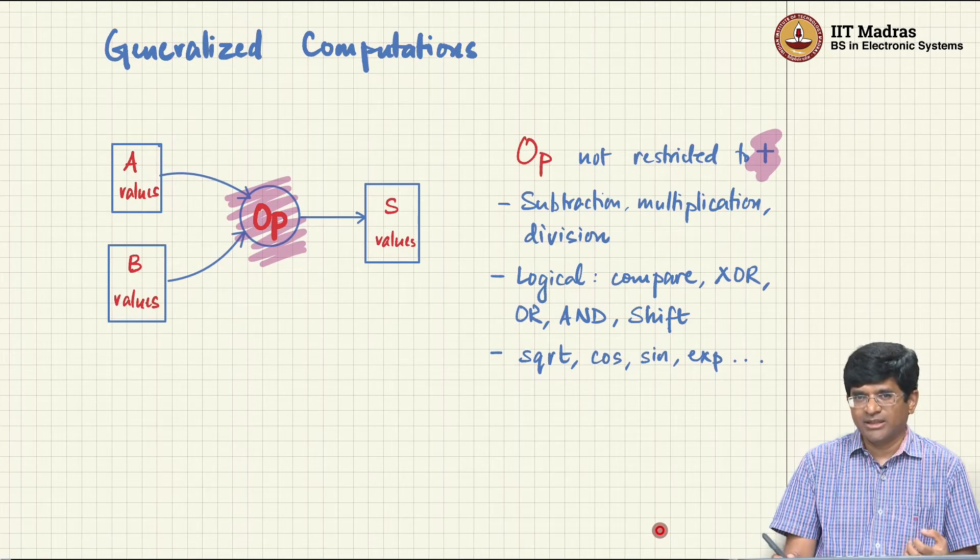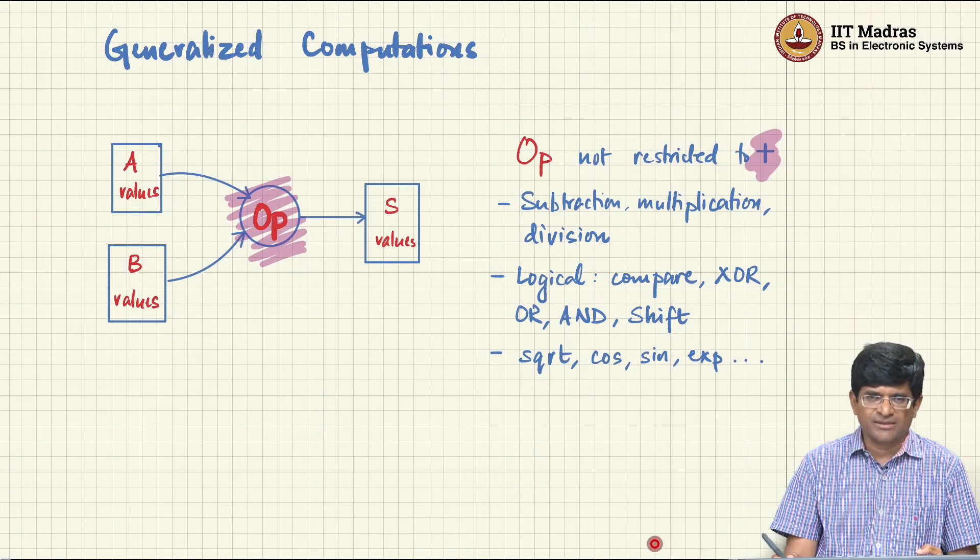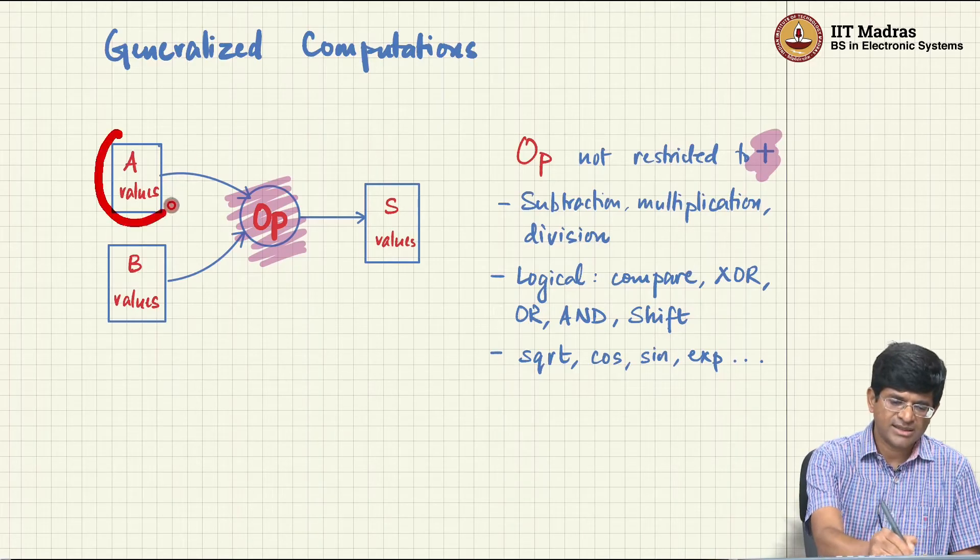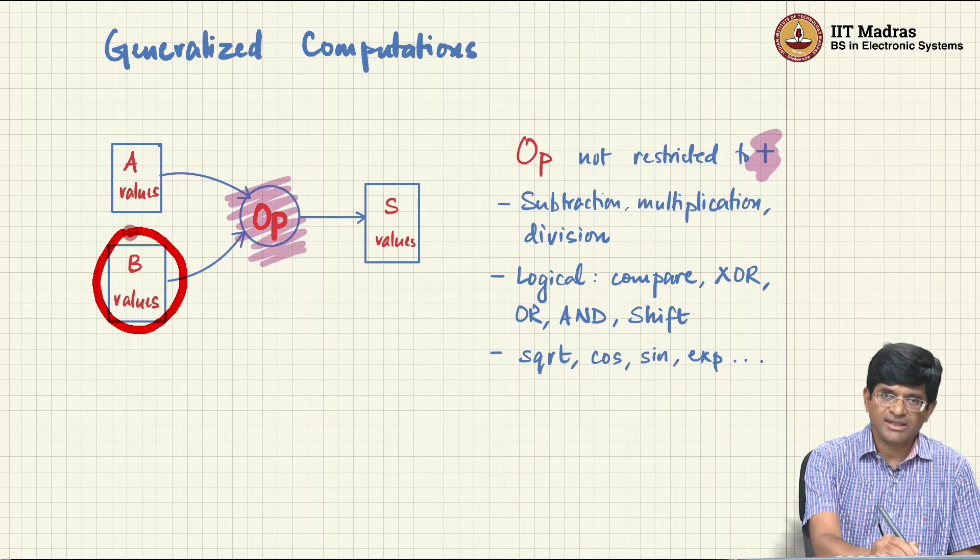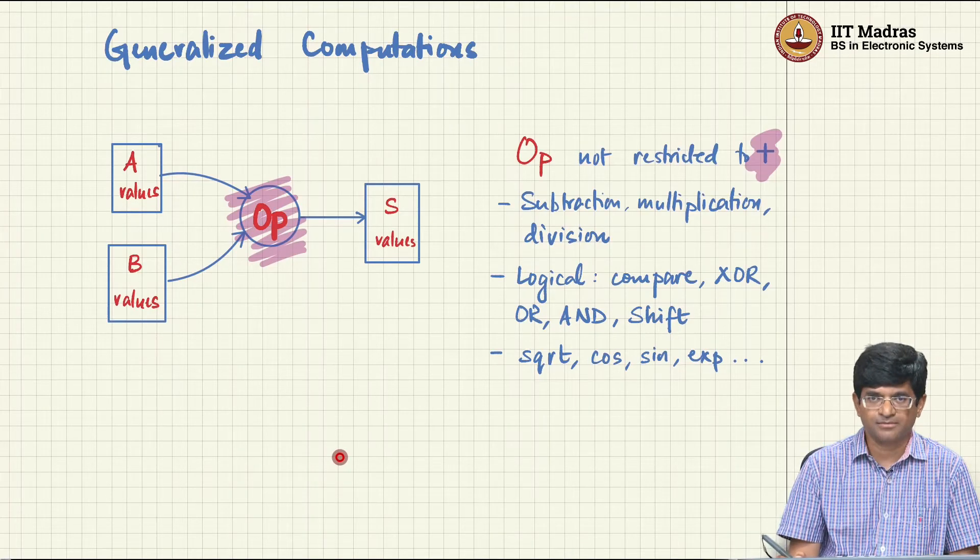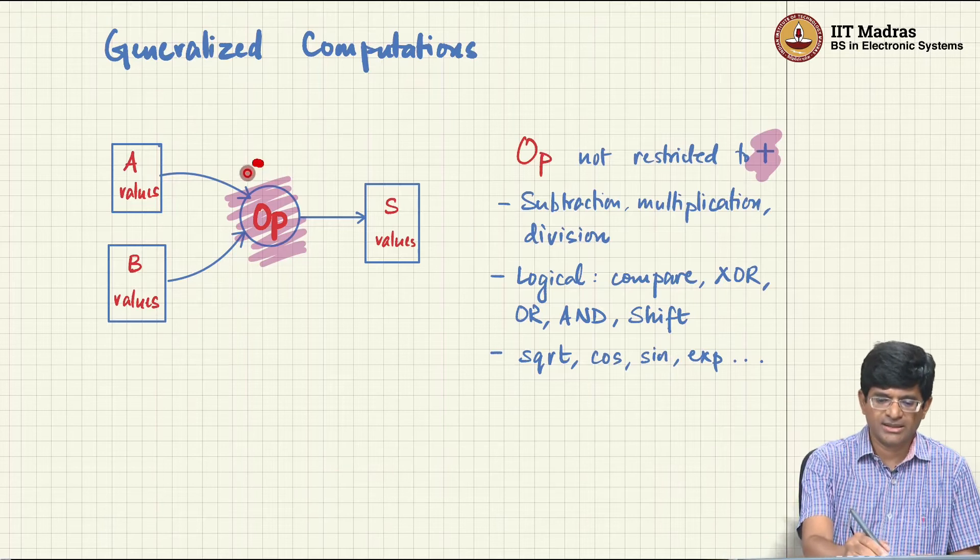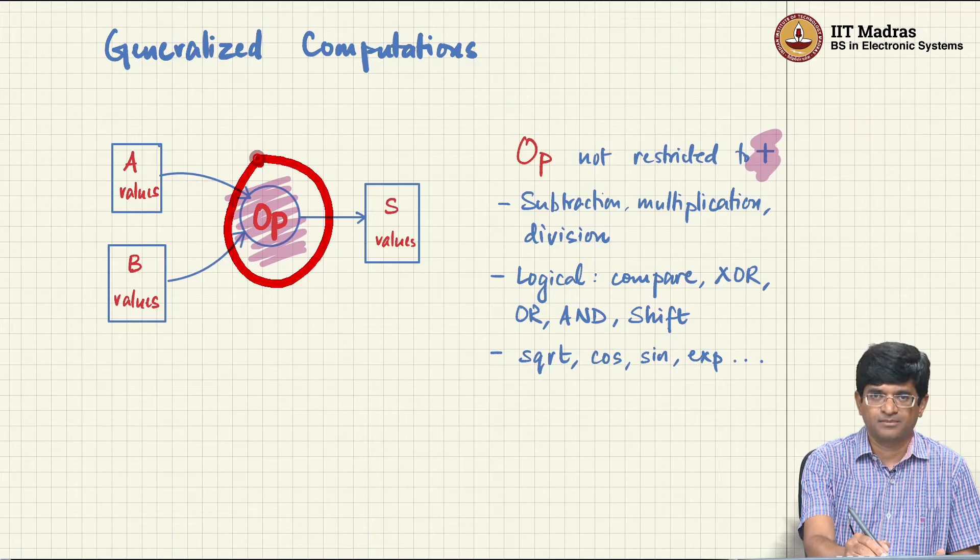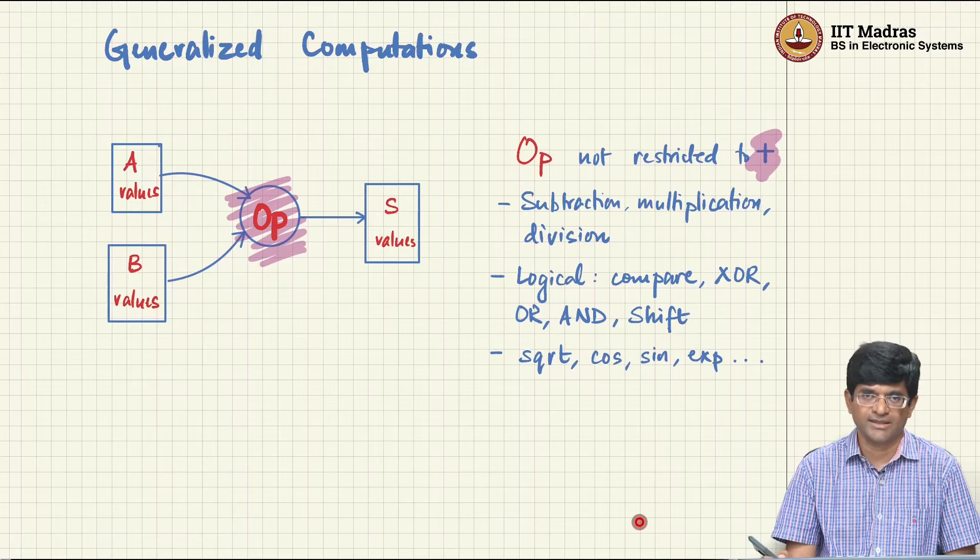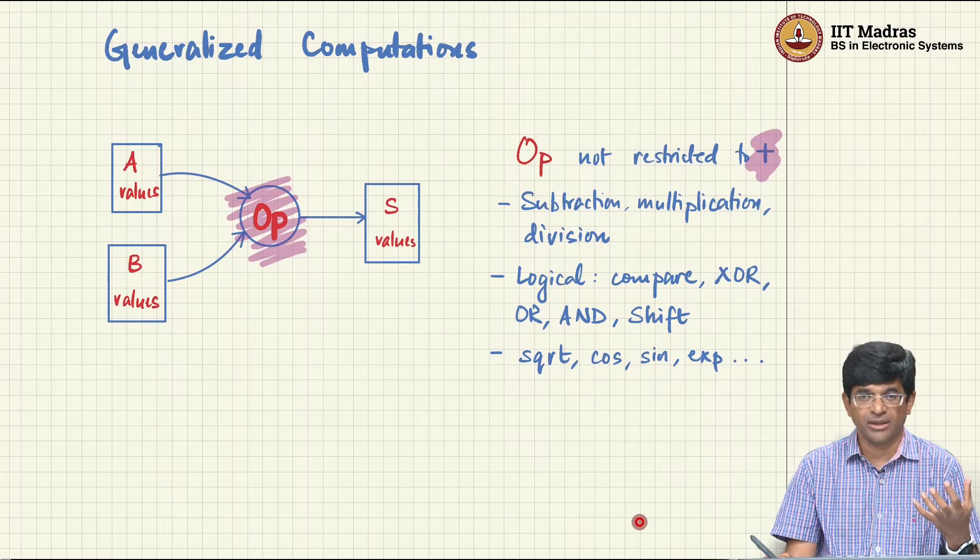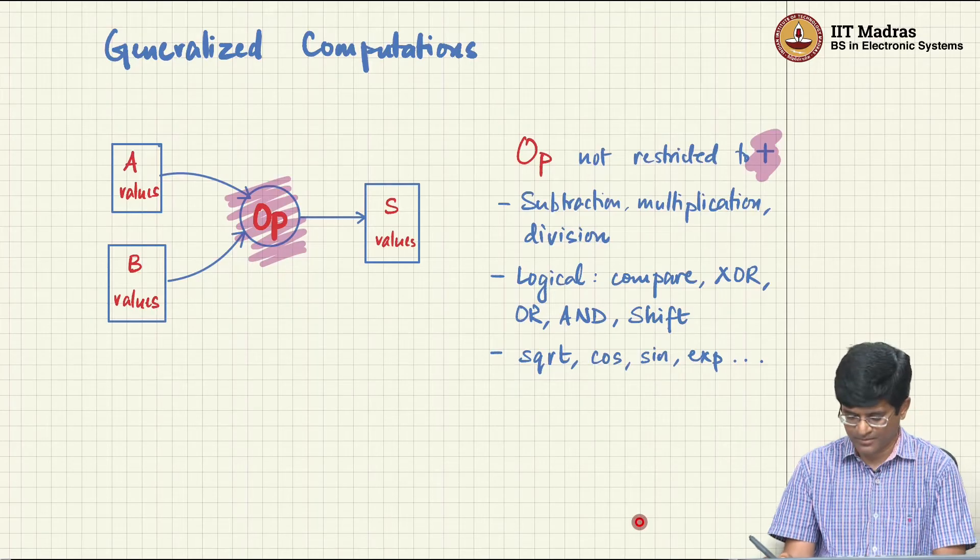Now of course, the question then becomes what exactly does it mean to generalize it. And what I have in mind over here is, after all this A and B, the set of inputs, were coming in from some memory blocks, that is from somewhere outside. And the point that I am trying to make is why cannot op as well come from somewhere else. It need not be something that is hardwired into the hardware of the system. It could be something that can be changed depending on the inputs that we want to deal with.